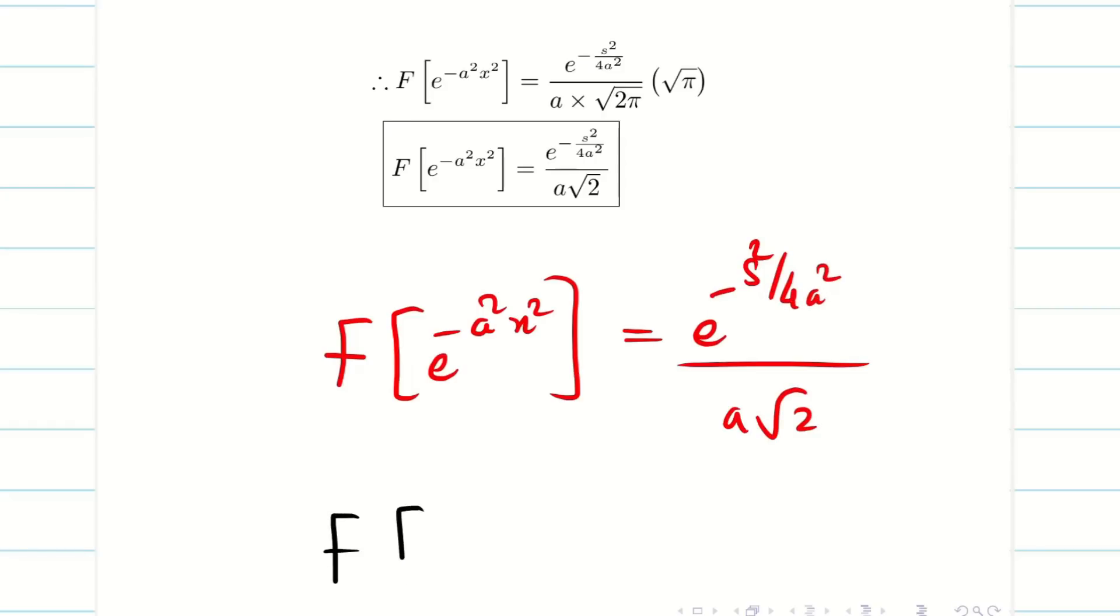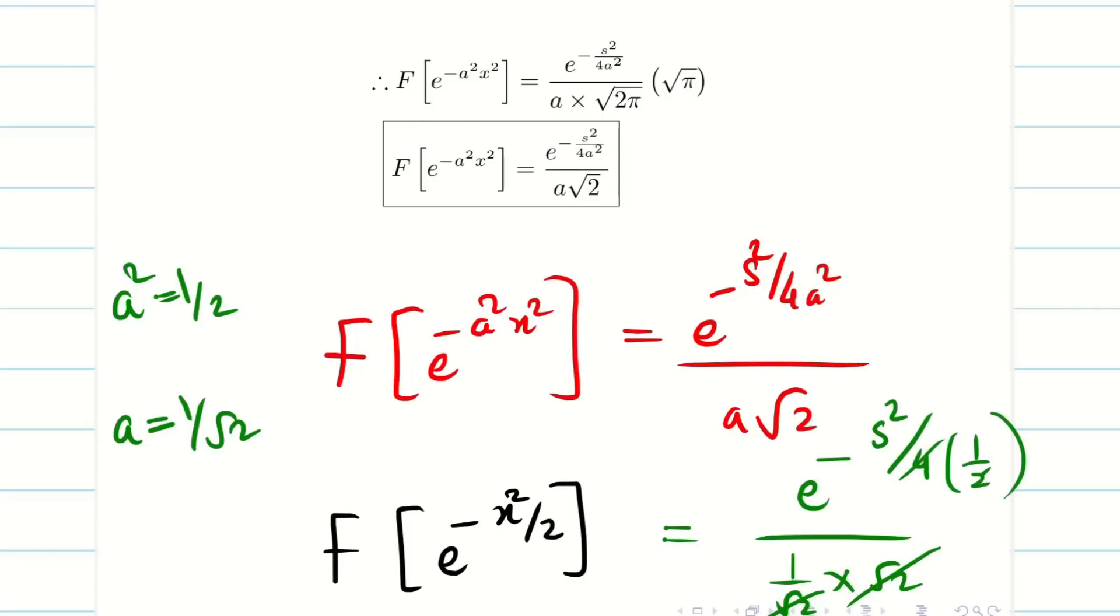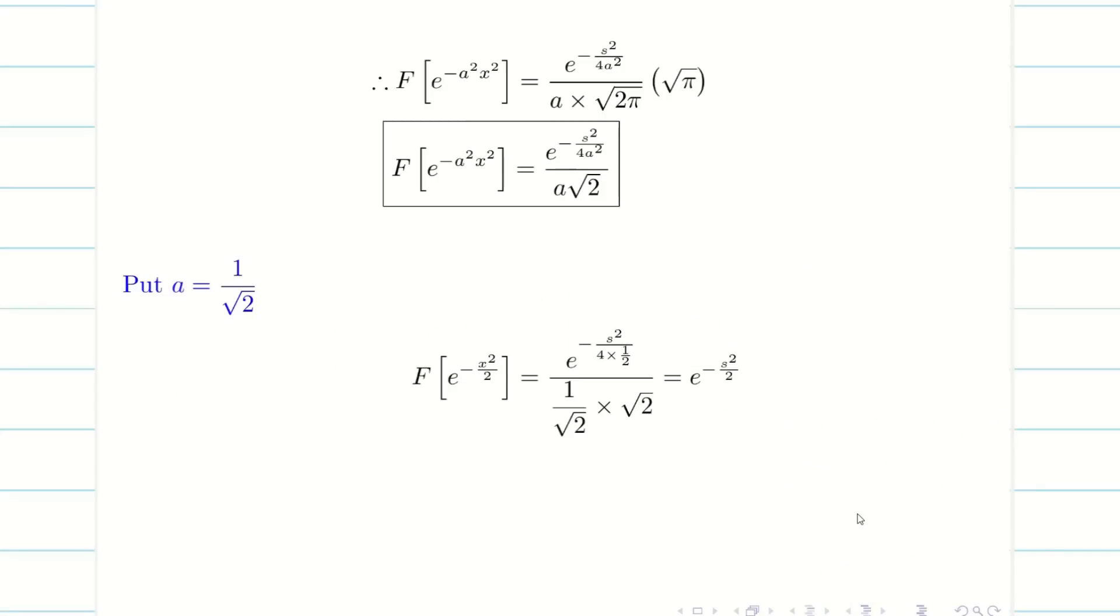Now I want to find F of e to the minus x squared by 2. That is nothing but my a squared is 1/2, and a is going to be 1 over root 2. Now if you substitute this, my denominator will become 1 over root 2 times root 2. Both will cancel. Here, e to the minus s squared, 4 by a squared is 1/2. The 2s cancel and I will achieve my final answer.